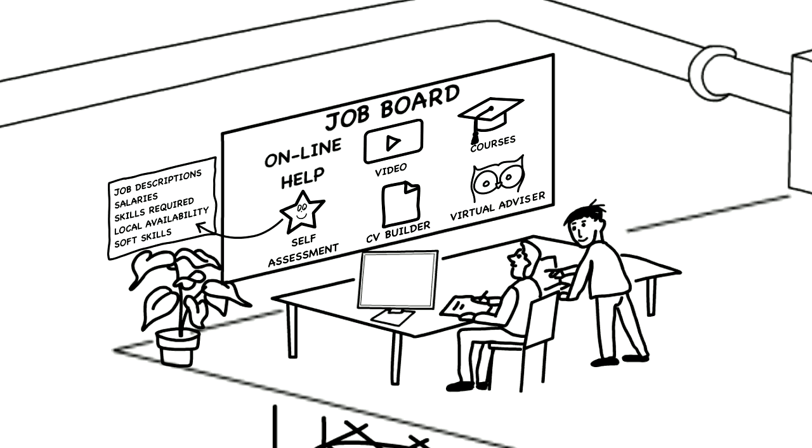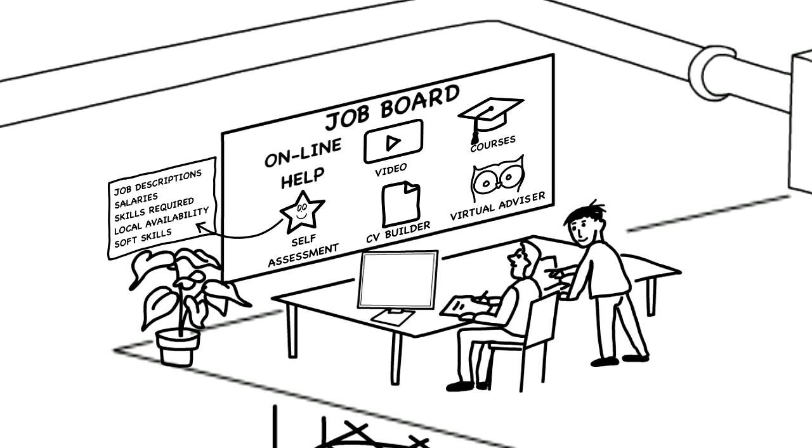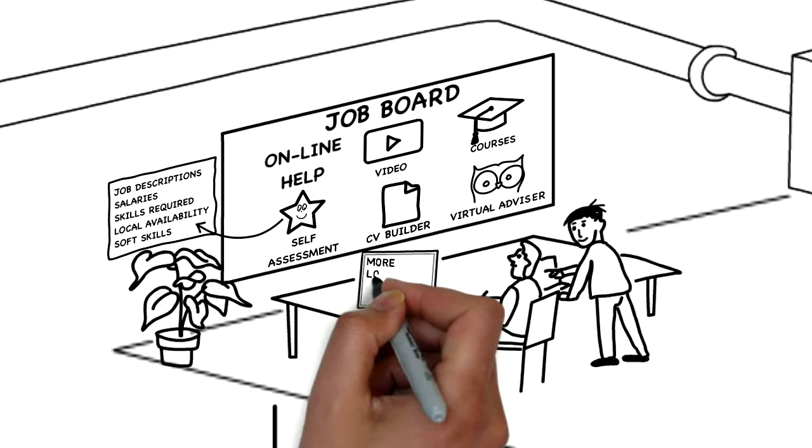The job board's virtual advisor might make suggestions such as: other people looking at these jobs also looked at these types of jobs. It could also suggest links to other relevant government departments like the National Apprenticeship Scheme, the National Careers Service, and for migrant workers, links to guidance in different languages, help with housing, and help with finding suitable schooling.